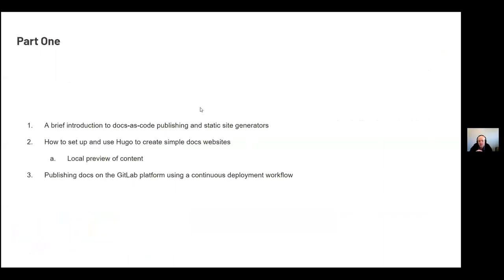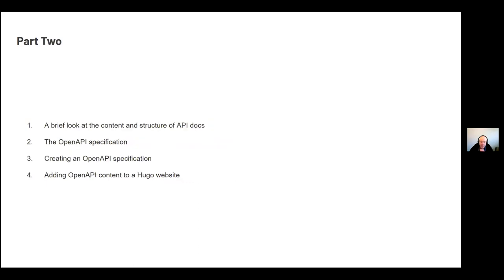This is a two-part talk. The motivation for doing this is to present OpenAPI specifications, which are an important part of the documentation landscape these days. The prerequisite is showing you how to set up a publishing platform so you can actually publish them to a wider audience. I've picked Hugo as the example. We'll go through how you set up a Hugo website and publish it on a public cloud infrastructure system, and then next month I'll talk about the OpenAPI specification.